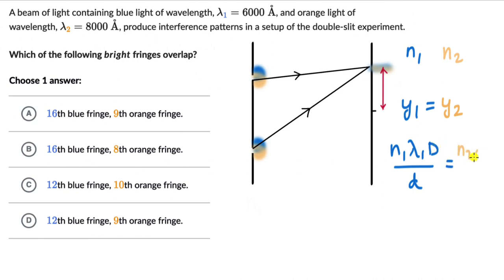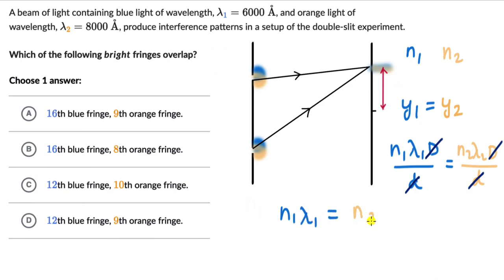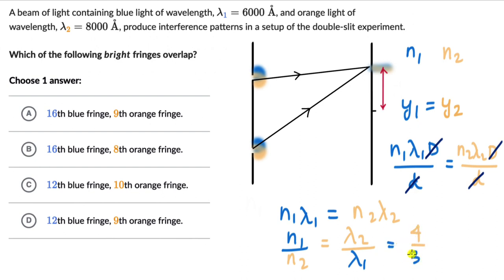We can express this mathematically: y1, the distance from the center to the n1 order bright fringe, equals n1 times lambda1 times D divided by d, and this equals n2 times lambda2 times D divided by d. Here D is the distance between the two planes and d is the distance between the slits. D/d cancels from both sides, leaving n1 times lambda1 equals n2 times lambda2, or n1 divided by n2 equals lambda2 divided by lambda1.